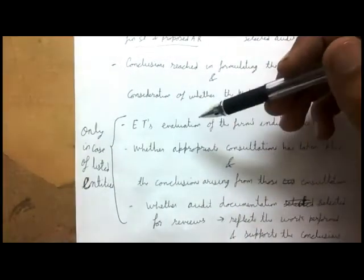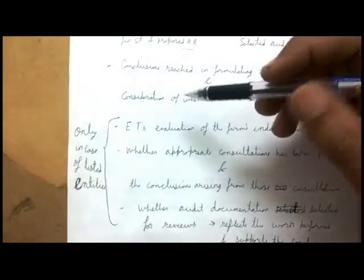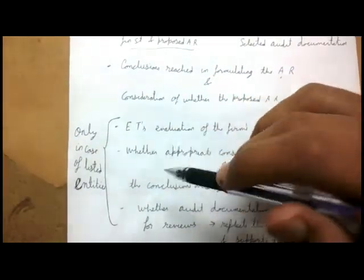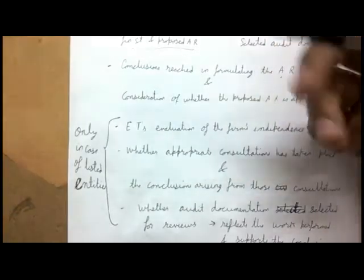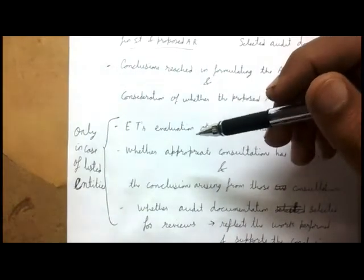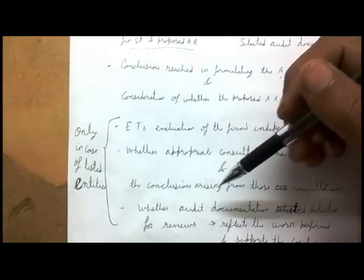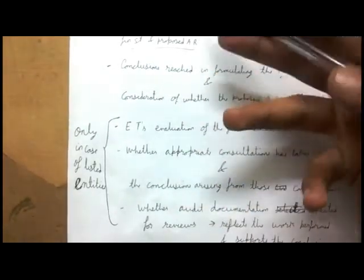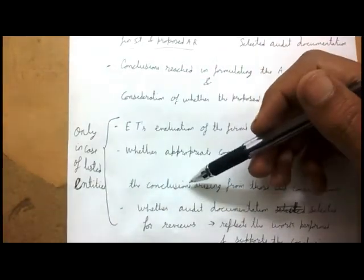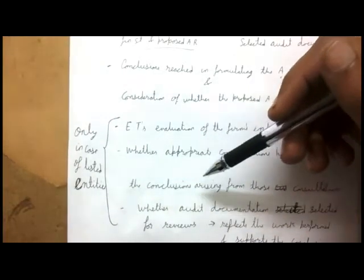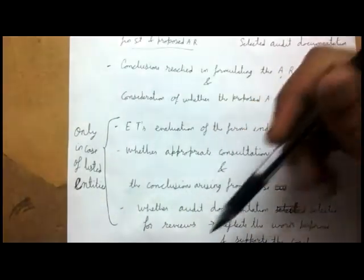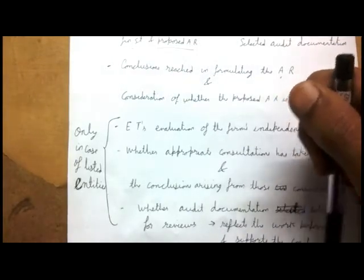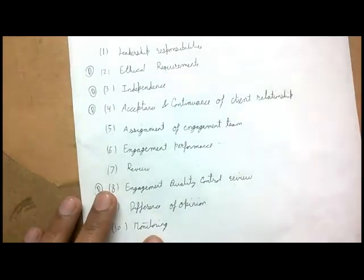For listed entities only, the EQCR shall additionally evaluate: the engagement team's evaluation of the firm's independence; whether appropriate consultation has taken place and the conclusions arising from those consultations; and whether the audit documentation selected for review reflects the work performed and supports the conclusions reached.